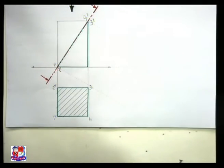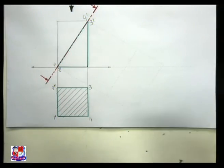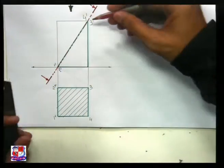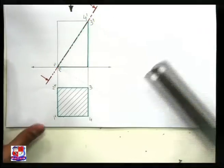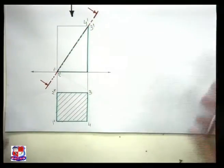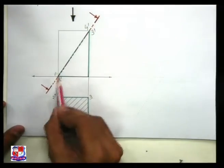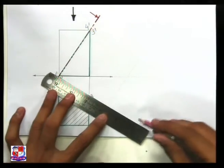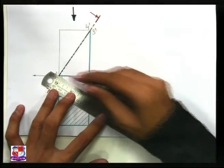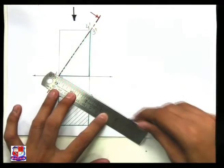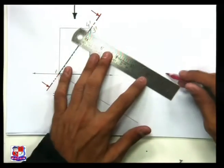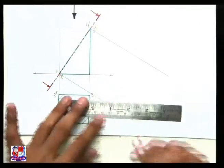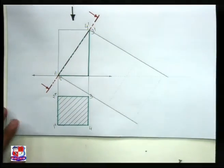Now how to draw the true shape of this section. The first step is to draw lines perpendicular to the cutting plane line from the respective points. We have identified four points: one dash, two dash, three dash, and four dash. From each point, draw a line perpendicular to the cutting plane line passing through all four points like this.